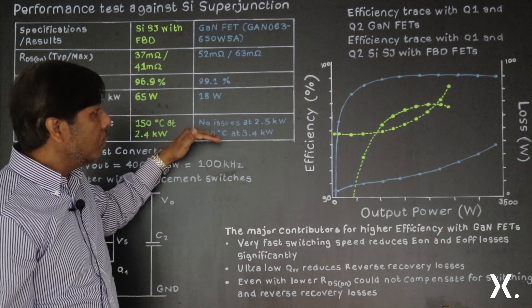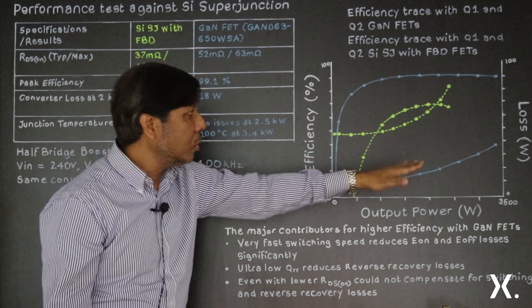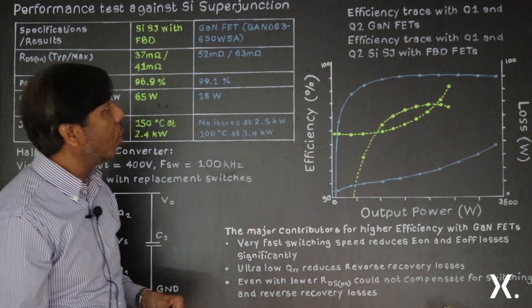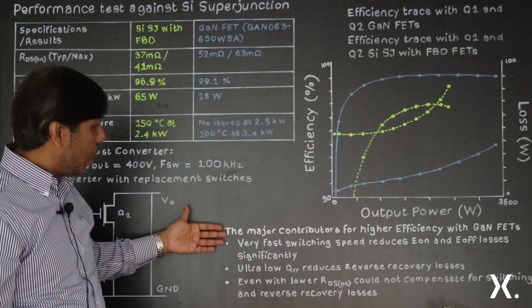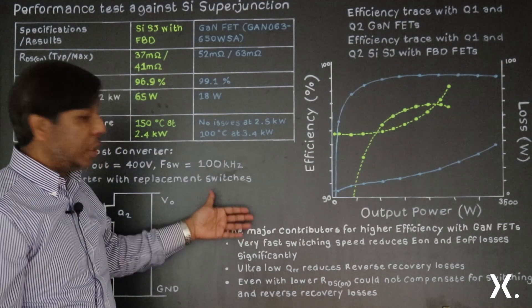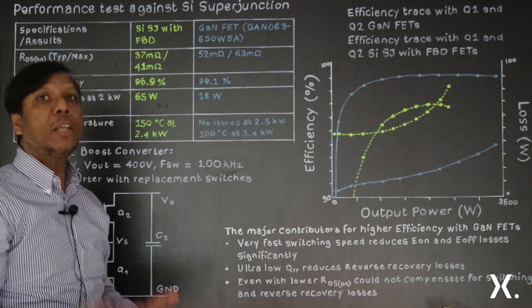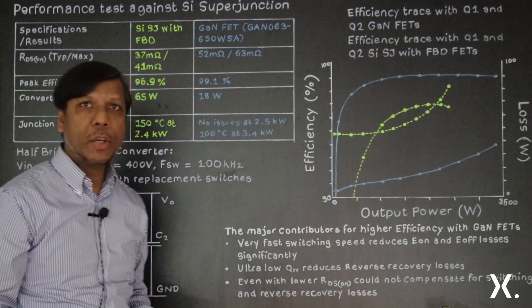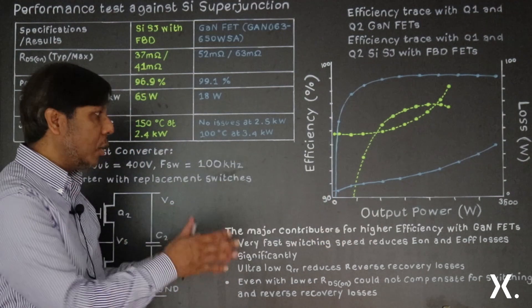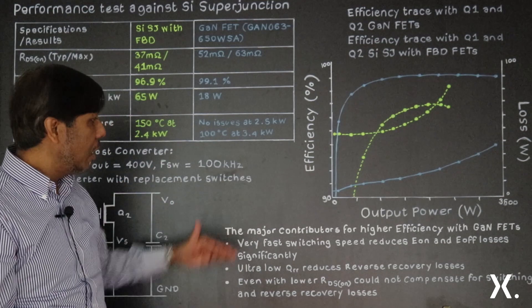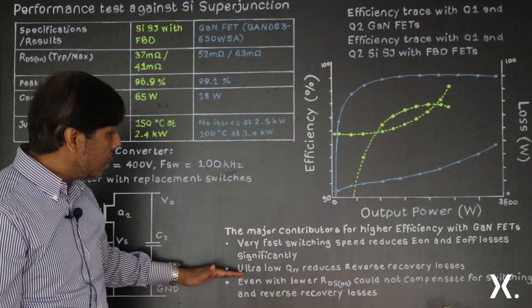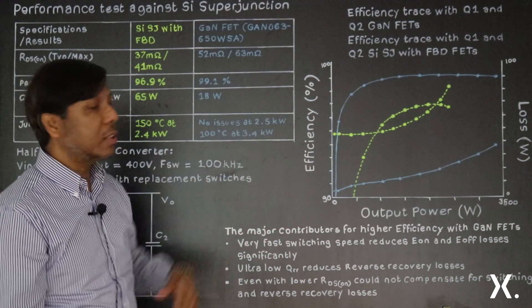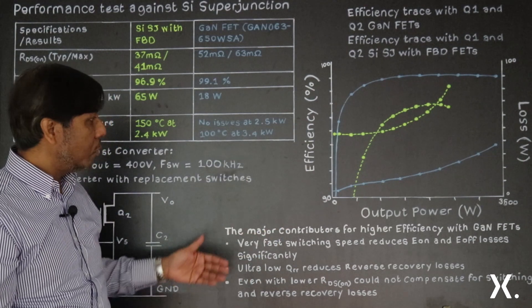So that gives significantly lower power loss on the gallium nitride-based solution. The major contributors for this high performance are that the gallium nitride-based solution has got very low switching losses because it's very fast switching, and it has got Eon and Eoff, which is the turn-on and turn-off losses every cycle, at the minimal. And the ultra-low Qrr or virtually no Qrr makes gallium nitride very attractive for lowering losses in power conversion.